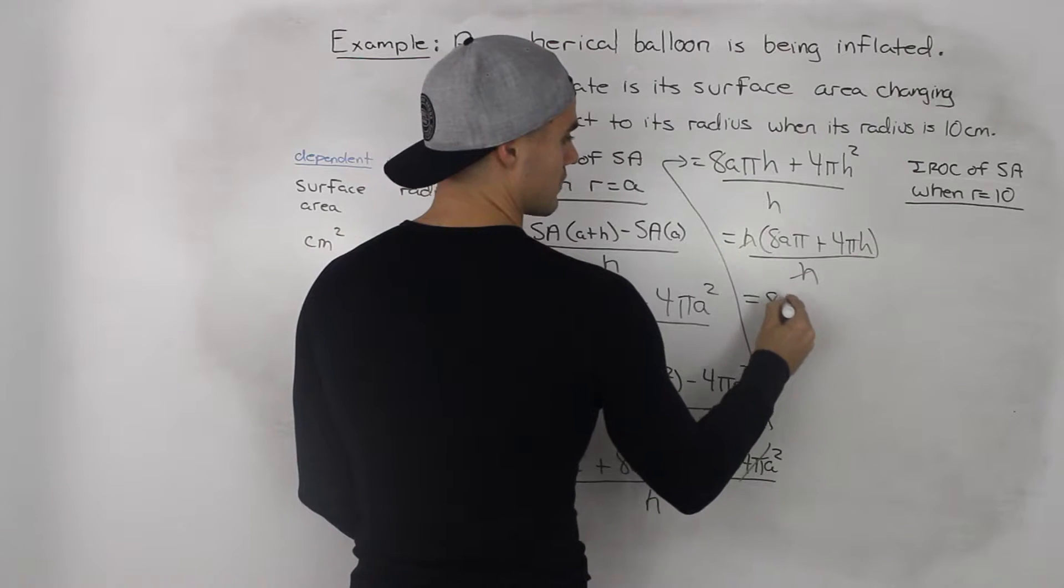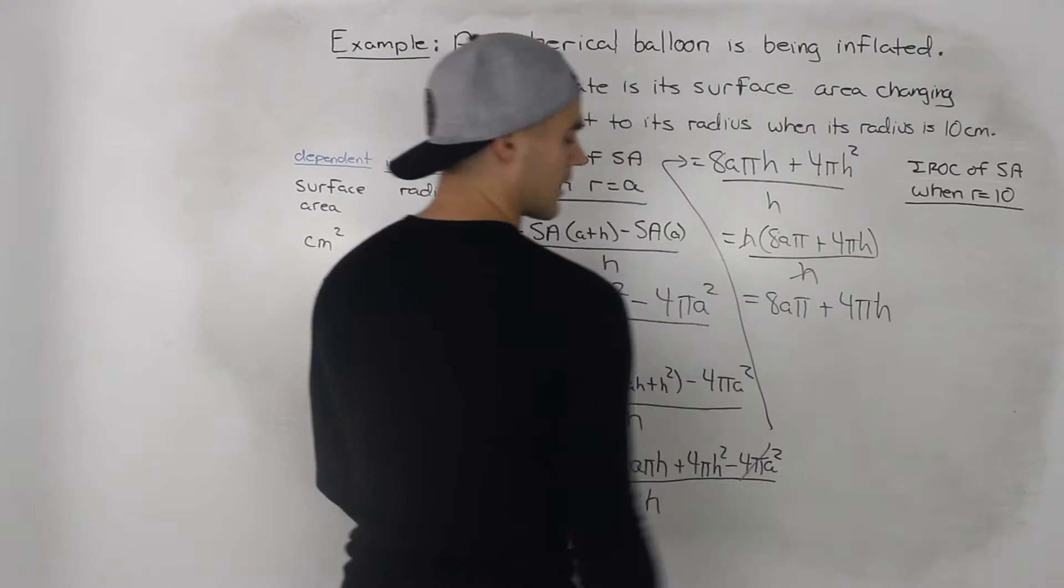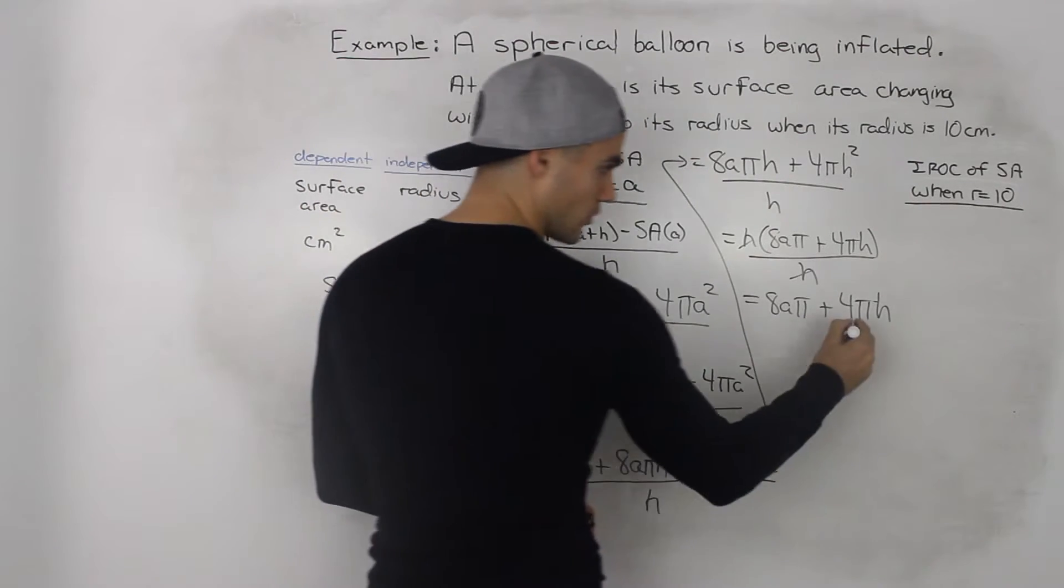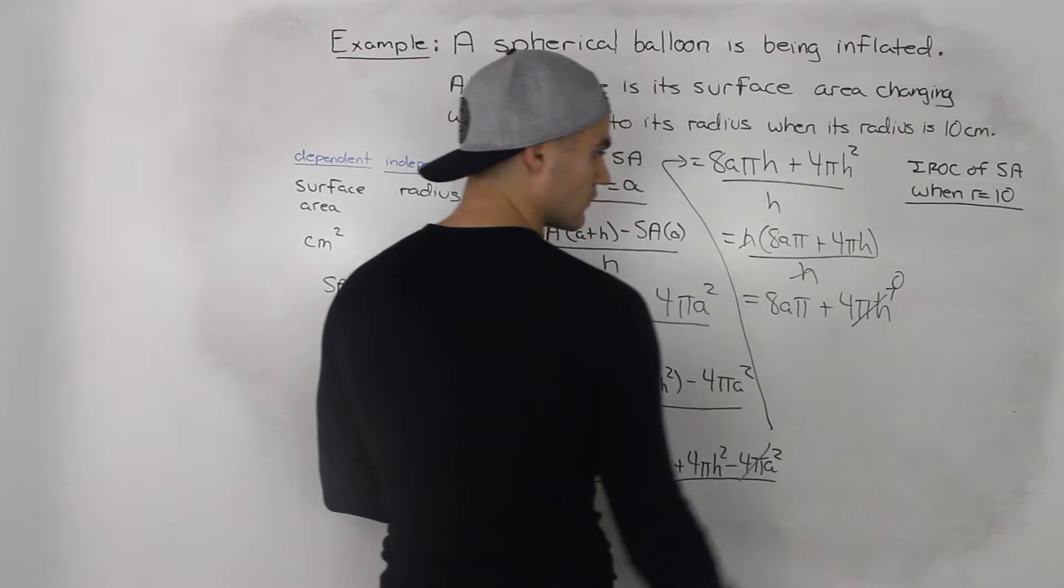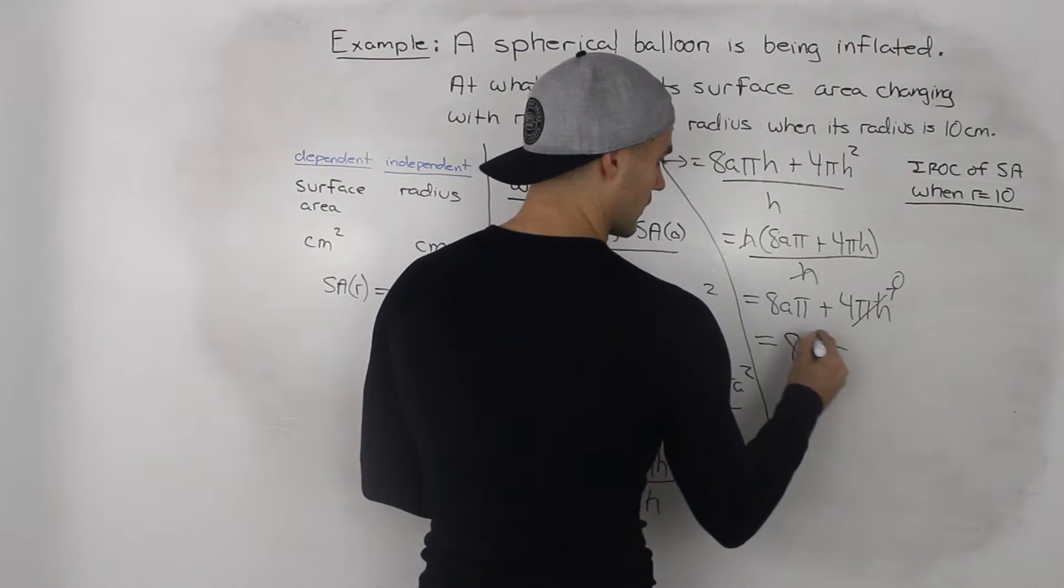And we're left with 8aπ + 4πh. And then remember the instantaneous rate of change happens when h approaches 0. So all of this would go to 0. So this would be our final answer.